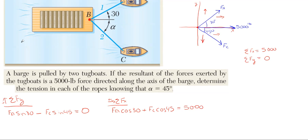So from the y equation, if we rearrange for F_A, we're going to get F_C sine of 45 divided by sine of 30. This comes out to be sine 45 divided by sine 30, which is 1.414 F_C.